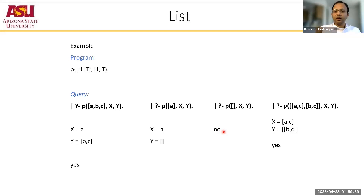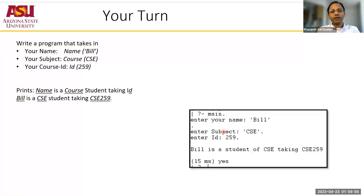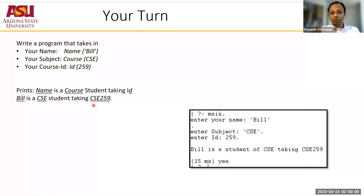Write this program, see various inputs for h and t, and see where it runs and where it fails. What about a string? If you give a string as input, how would it read a string? That's for today. For you to do: write a simple program that takes in your name, your course, and an ID, and outputs something like 'Your name is Bill, is a CSE student taking CSE 259.' This is a simple program for you to run and learn more about Prolog. From the next class, we will learn to write our first project.